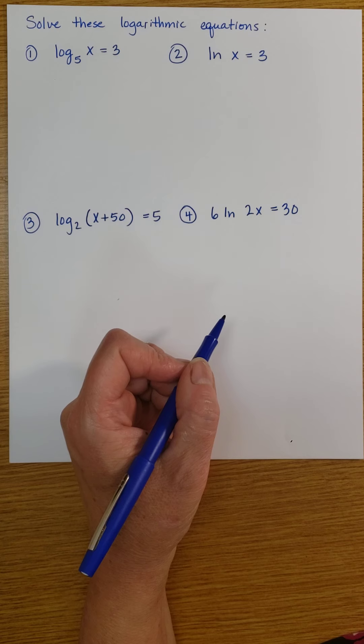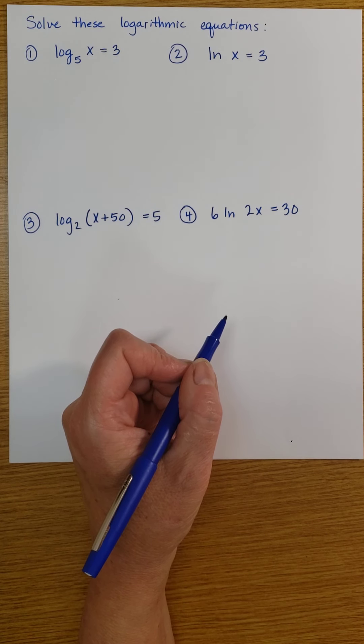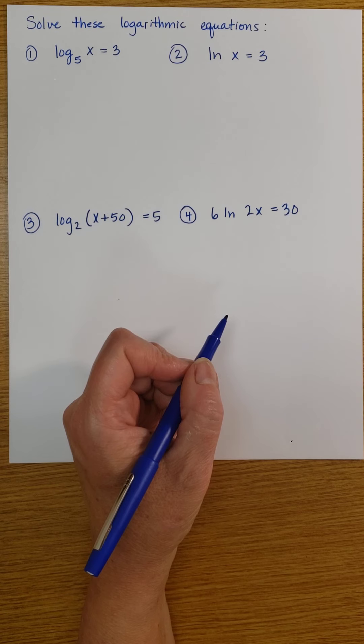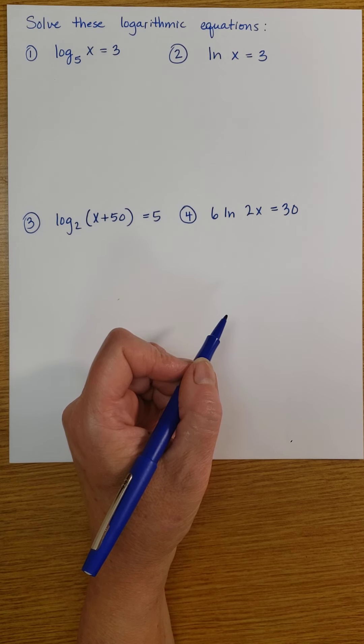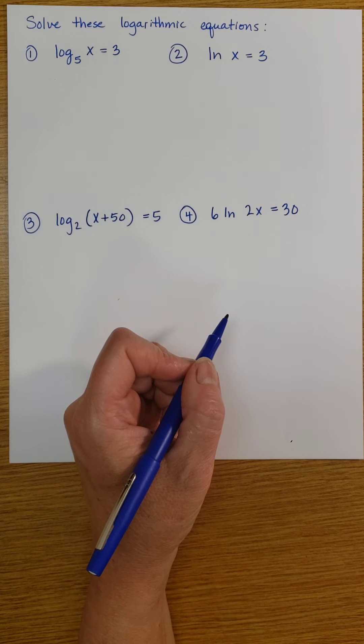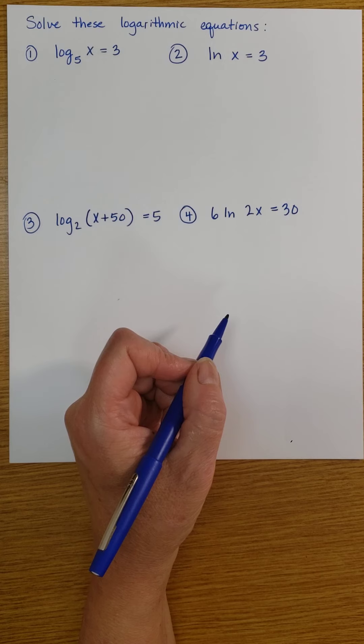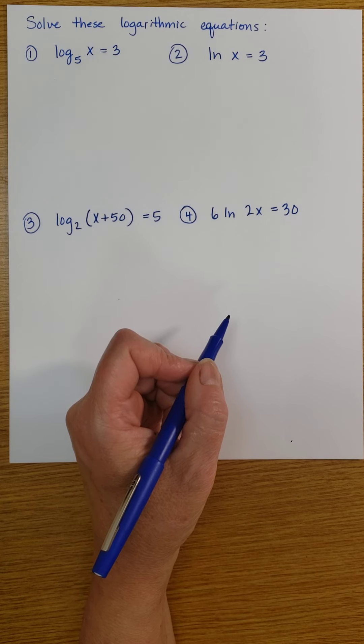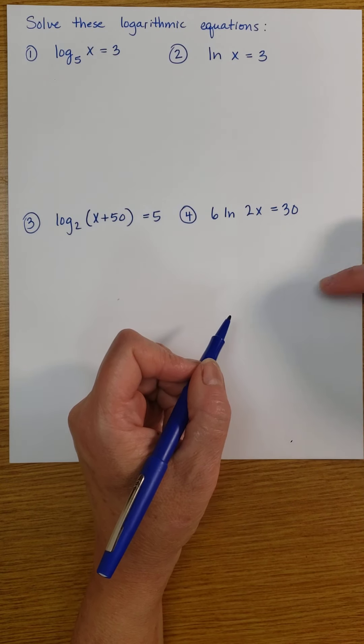But one important note that I should make is that logarithmic expressions are defined only for logarithms of positive real numbers. So you always have to check your answer when you're finding the solutions. You might get extra solutions that when you actually plug them in don't work because they're negative. So it's always important to be taking the log of a positive number, and you'll see as we work on these examples.